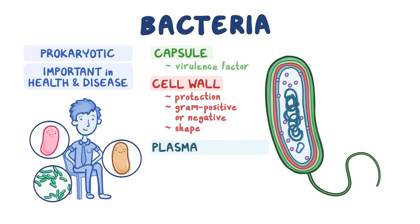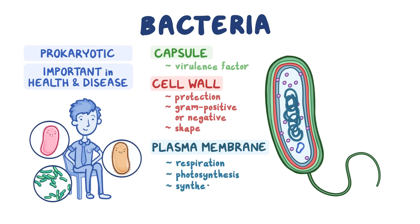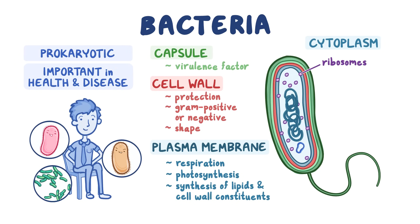Underneath the cell wall, there's the plasma membrane — the most important layer — which encloses the cytoplasm and defines the cell, having important roles such as respiration, photosynthesis, and the synthesis of lipids and cell wall constituents. The cytoplasm contains ribosomes, which are the site of protein synthesis; the nucleoid, which contains the genetic material; and plasmids, which contain genes that confer a selective advantage to the bacterium.